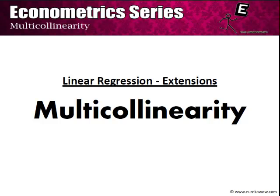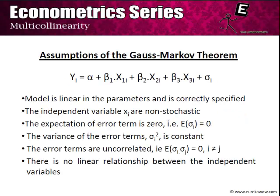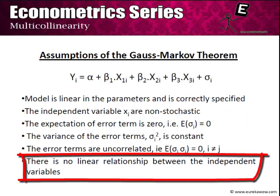One of the most frequent violations of the CLRM is the problem of multicollinearity. If you look at the Gauss-Markov theorem's assumption, the last assumption is that there is no linear relationship between the independent variables — meaning no perfect linear relationship between any two independent variables.